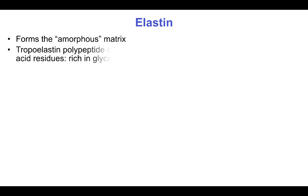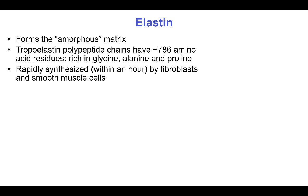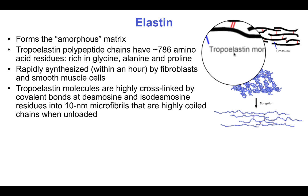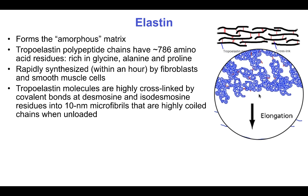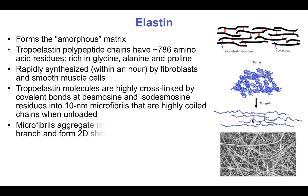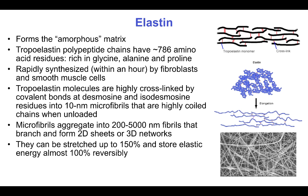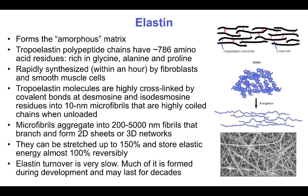Elastin forms the amorphous matrix in tissues. The tropoelastin polypeptide chains have 786 amino acid residues. They are rich in glycine, alanine, and proline. It is rapidly synthesized within an hour by fibroblasts and smooth muscle cells. The tropoelastin molecules are highly cross-linked by covalent bonds at desmosine and isodesmosine residues, into 10-nanometer microfibrils that, when unloaded, exist in highly coiled chains that straighten out under strain. These microfibrils aggregate into 200–5000 nanometer fibrils that branch and form 2D sheets or 3D networks in tissues like skin. They can be stretched up to 150% and store elastic energy almost completely reversibly. Elastin turnover is very slow — much of it forms during development and may last for decades.